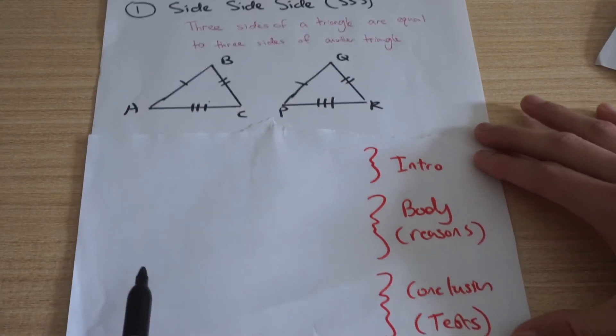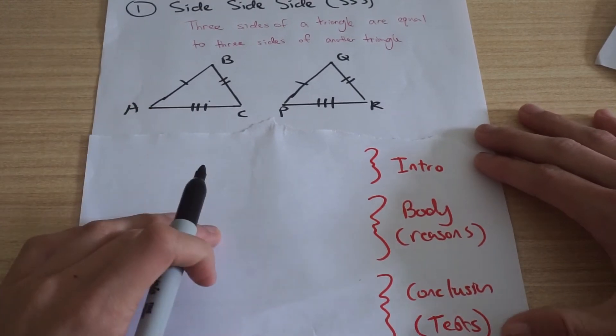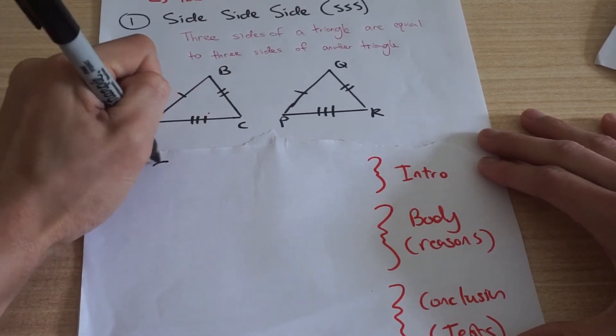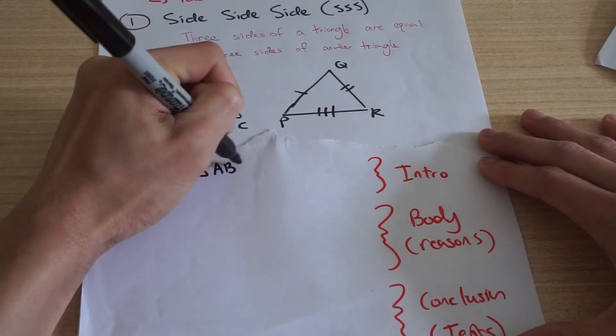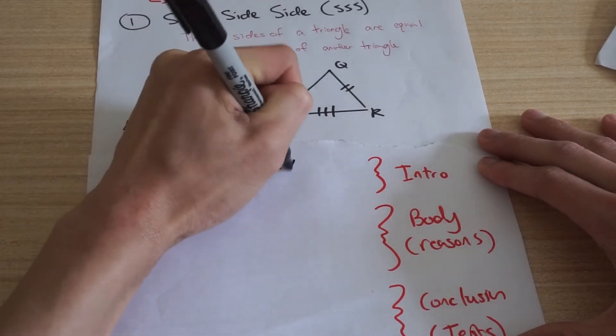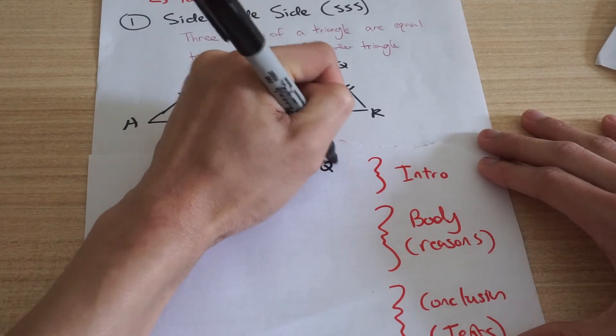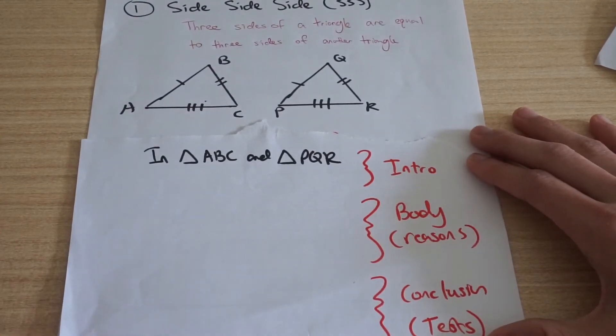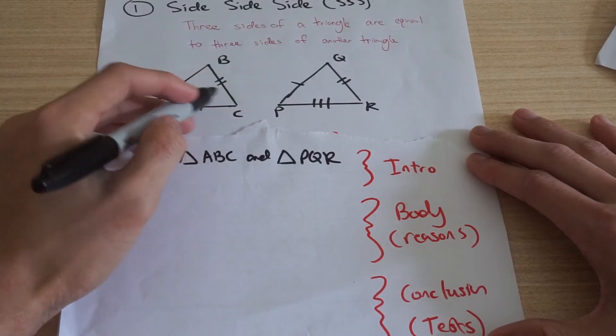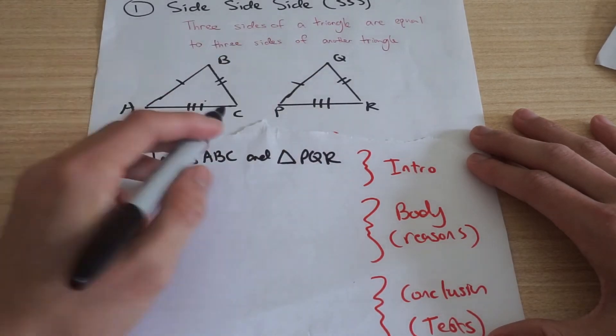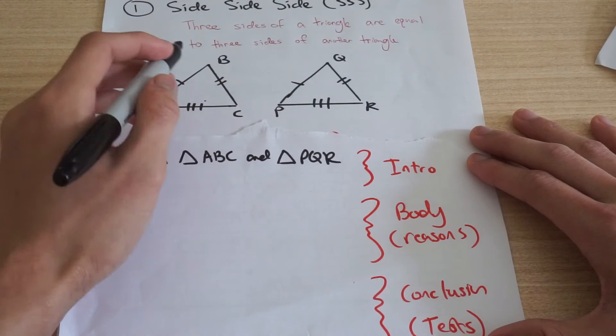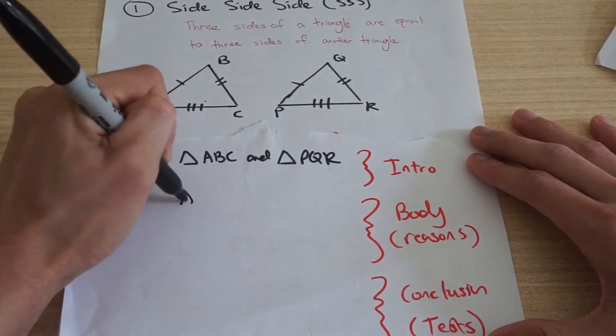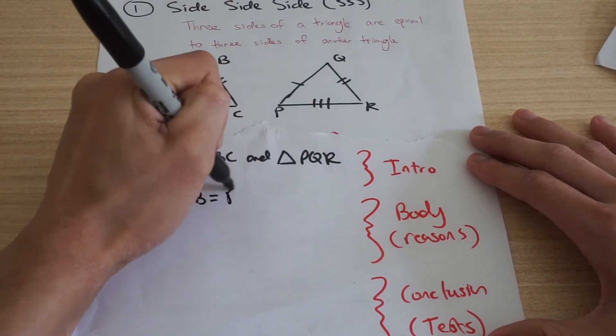So how do we, I guess, introduce our triangles? All we do is we say in triangle ABC and triangle PQR. Those are the two triangles we have and you want to think about, okay, what information am I giving here? Well, I'm giving that I've got three sides and I'm giving that they're equal to their corresponding ones. So I want to start off by saying, okay, well AB is equal to PQ.